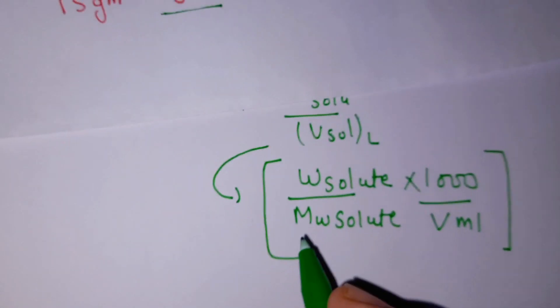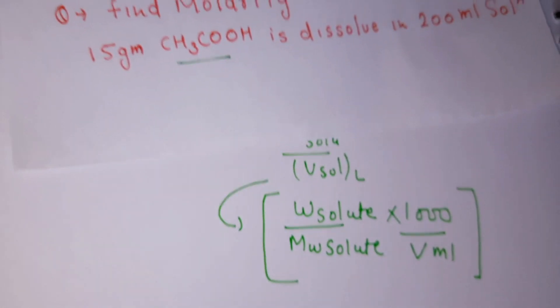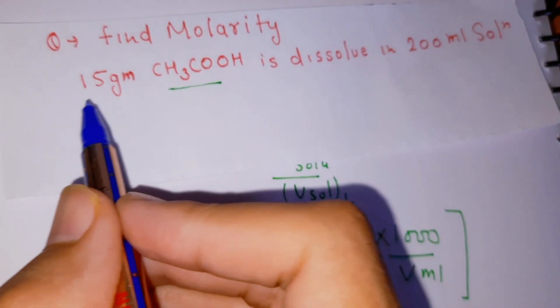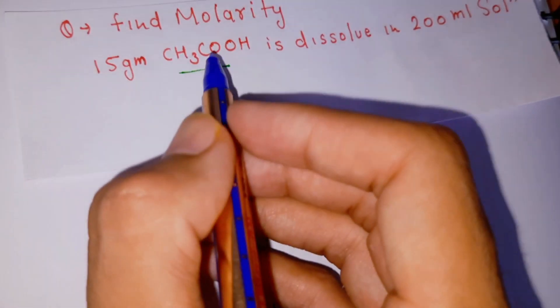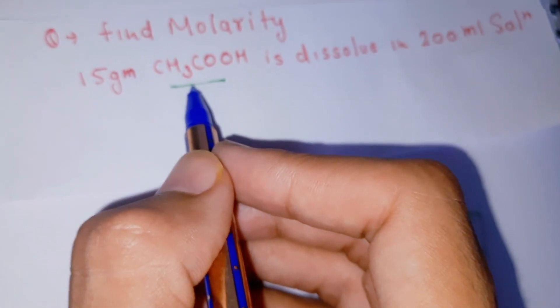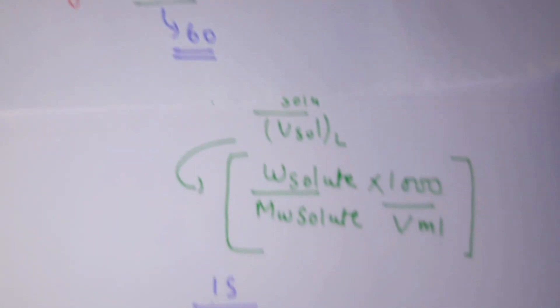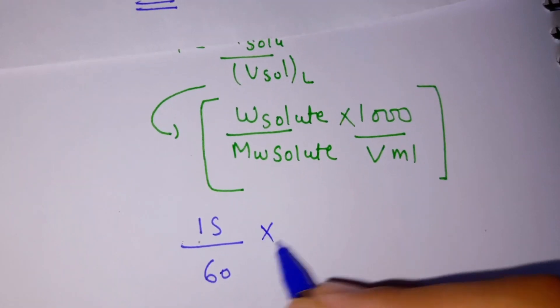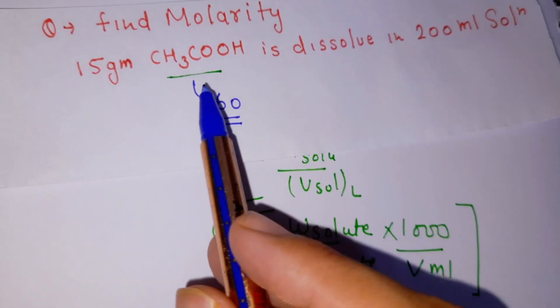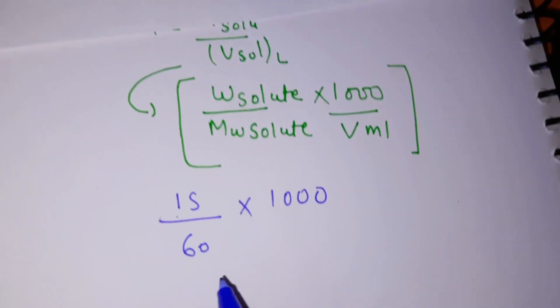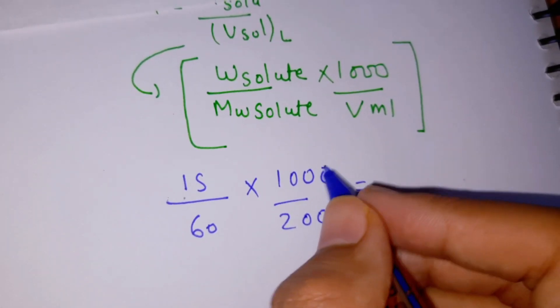Then by this formula we solve this question. Weight of solute is 15 gram, and molecular weight of solute acetic acid is 60, into 1000, and volume of solution is 200 ml.